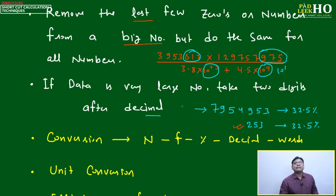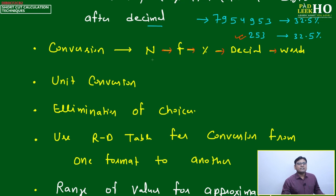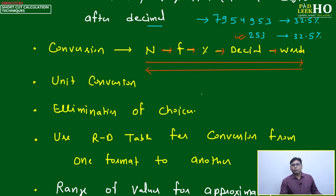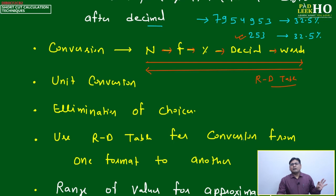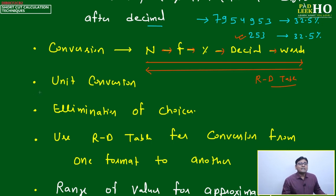The next point is conversion: number to fraction, fraction to percentage, percentage to decimal, and decimal back to number. These conversions should be very fast in both directions — left to right and right to left. One of the best tools for this is the RD table, which you can use to convert between all these formats. You can exploit the RD table at a very high level depending on how much you practice it.